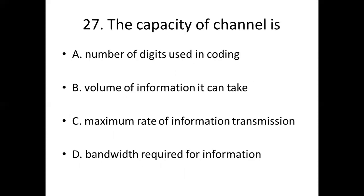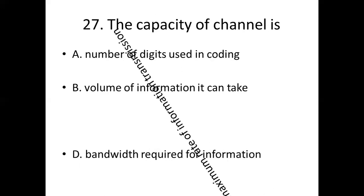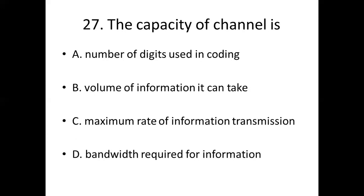27th bit. The capacity of a channel is: Option A, number of bits used in coding. Option B, volume of information it can take. Option C, maximum rate of information transmission. Option D, bandwidth required for information. Answer: Option C, maximum rate of information transmission.